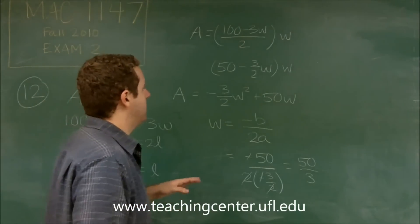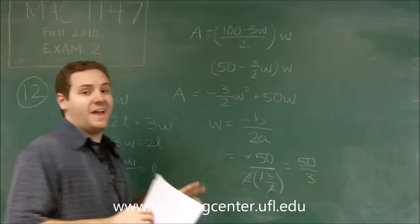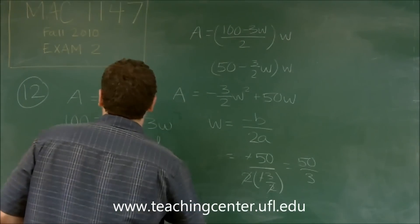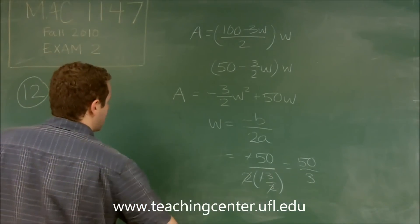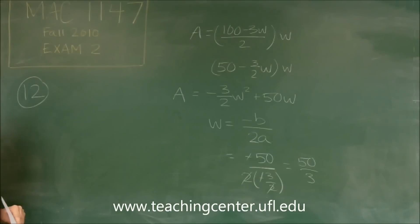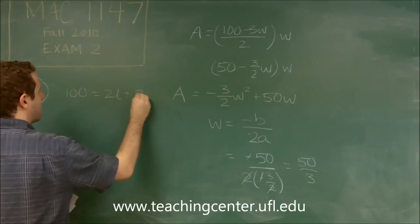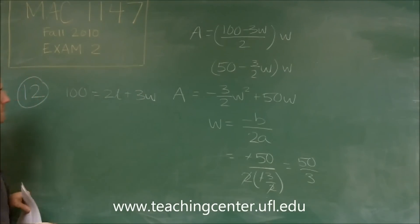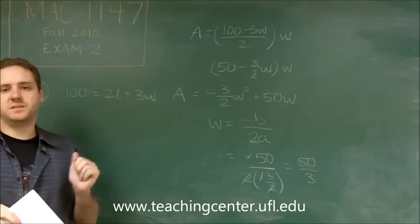So now we just need to plug this back in to find the actual area. Let me erase this over here. A couple different ways we could do that, but let's use, actually I probably need that equation. Let's use this equation, because now that we know W, we can find L, and then area is L times W.